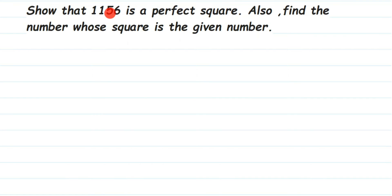If it is a perfect square, we have to find out its square root. They have given 'find the number whose square is a given number,' which is like finding the square root. Whose square is 1156? We have to find out, so that's nothing but finding the square root.